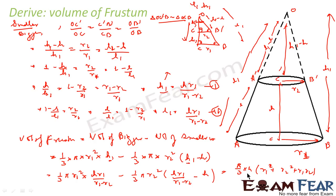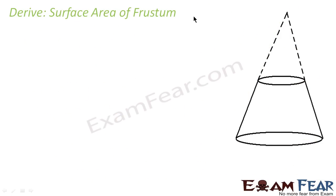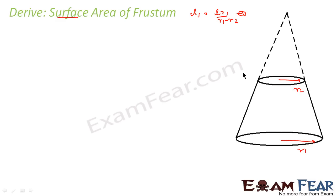I found the volume. Now the second thing is to find the surface area. For this I will use L1 = L·R1/(R1 minus R2). The surface area of the frustum equals the surface area of the bigger cone minus the surface area of the small cone. The big cone has slant height L1 and radius R1; the small cone has slant height L1 minus L and radius R2.